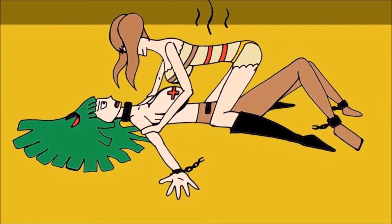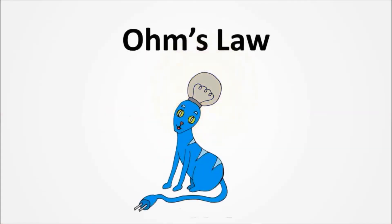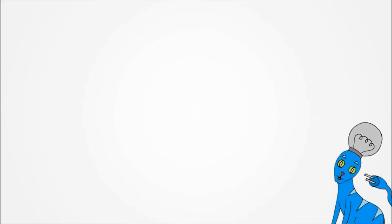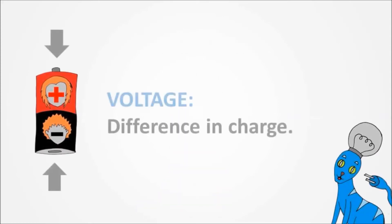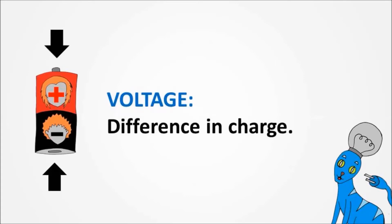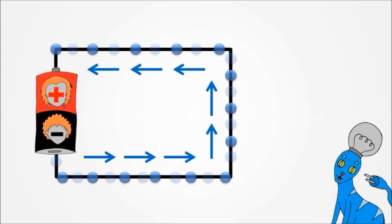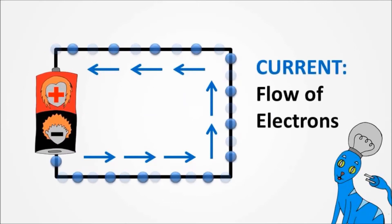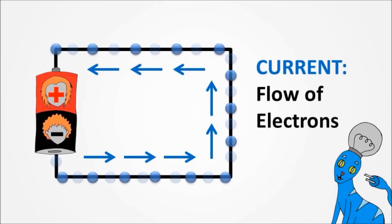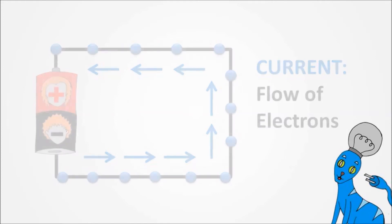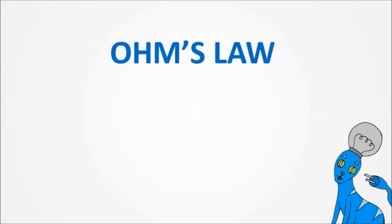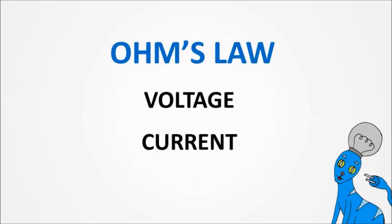Before we continue the story, do you know what Ohm's Law is? We have seen already that voltage is the difference in charge and current is the flow of electrons. Ohm's Law is the relationship between voltage, current, and resistance.